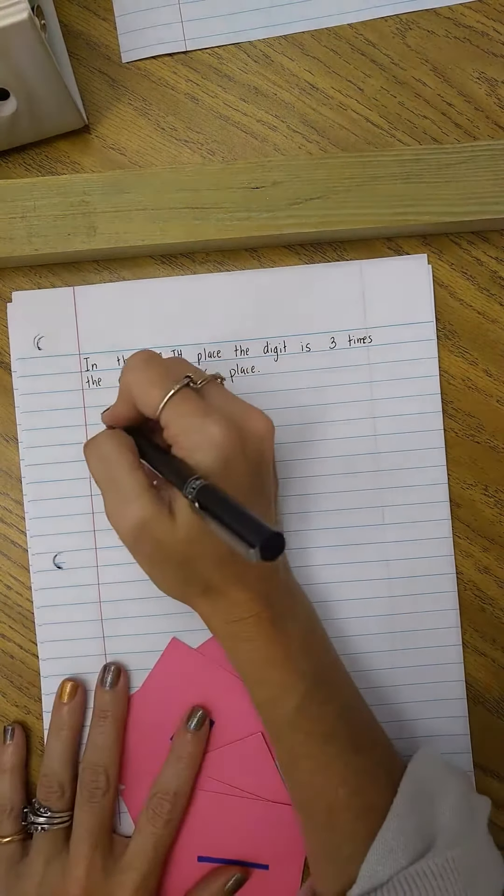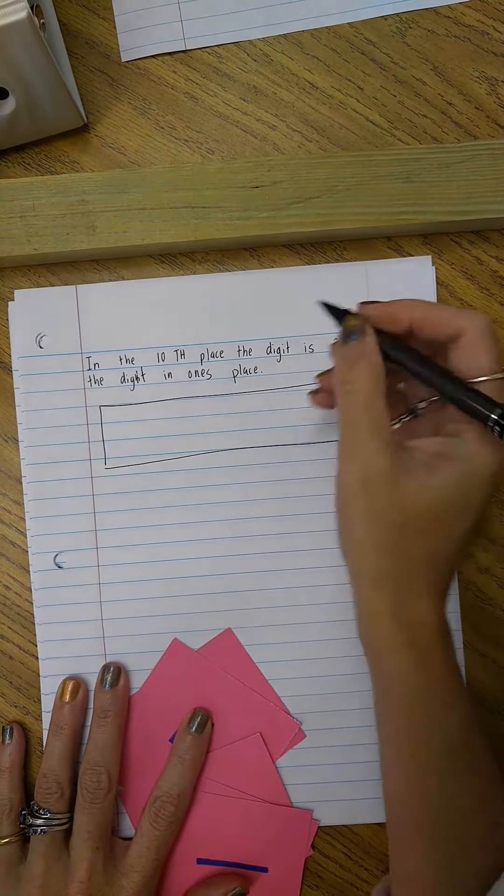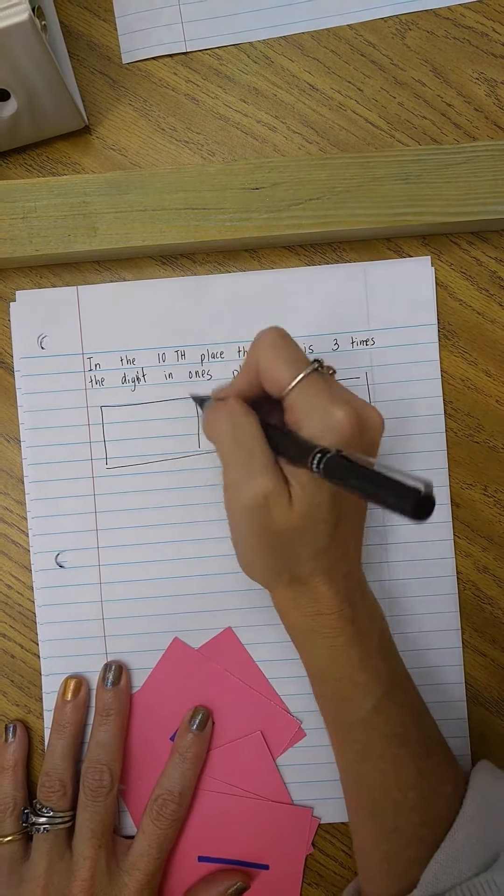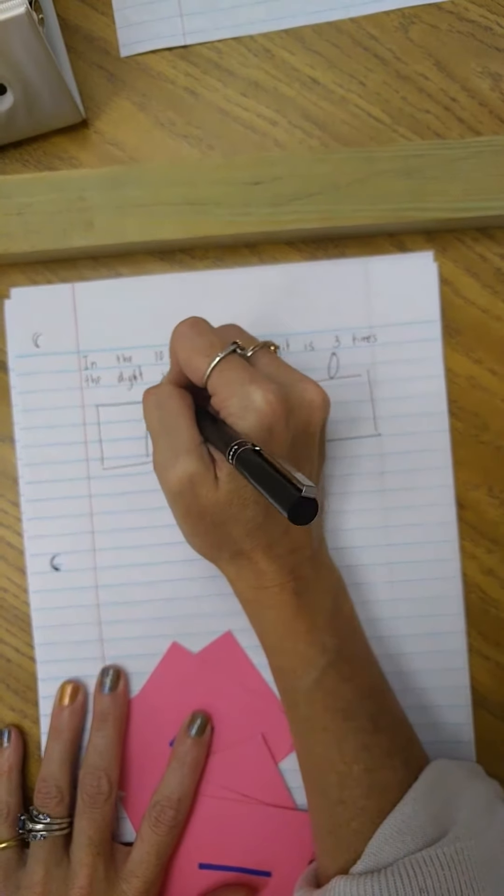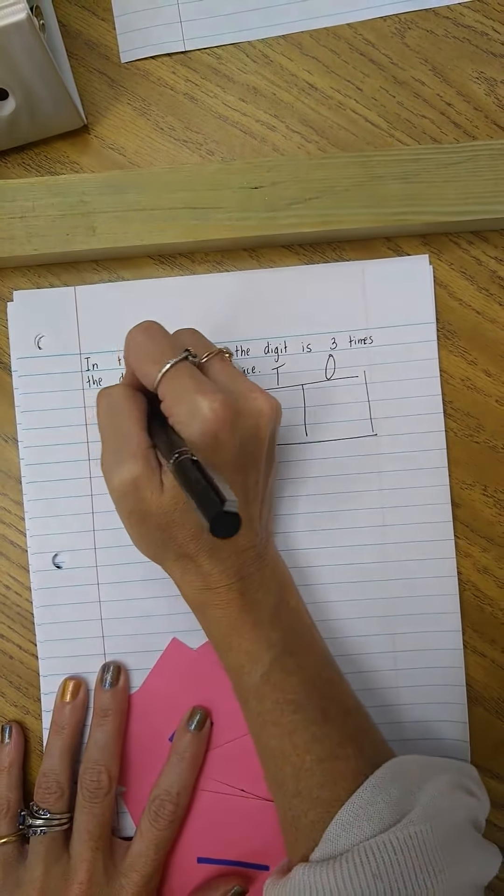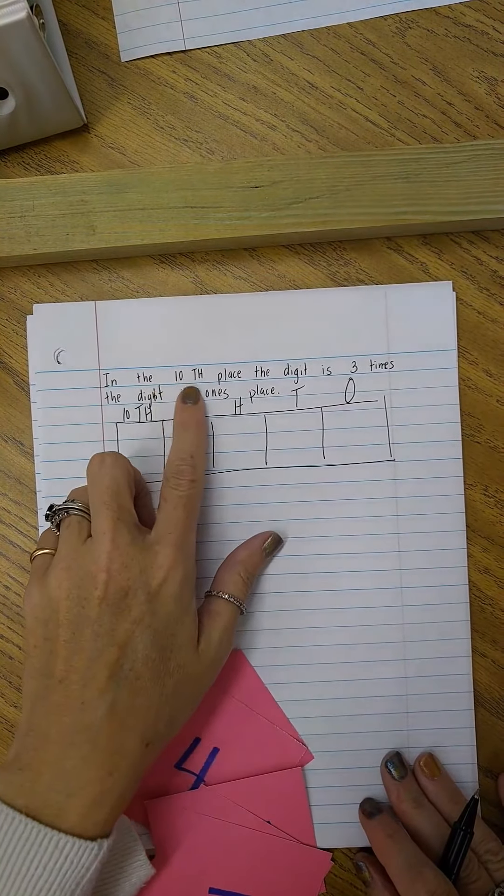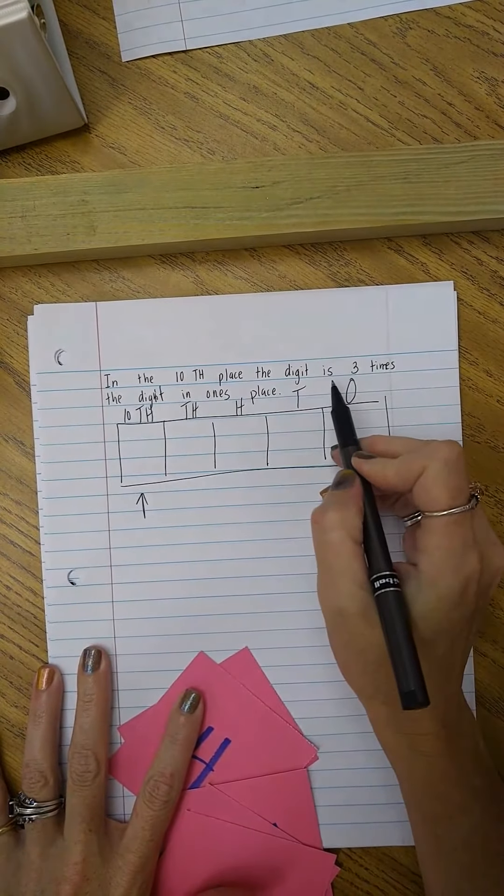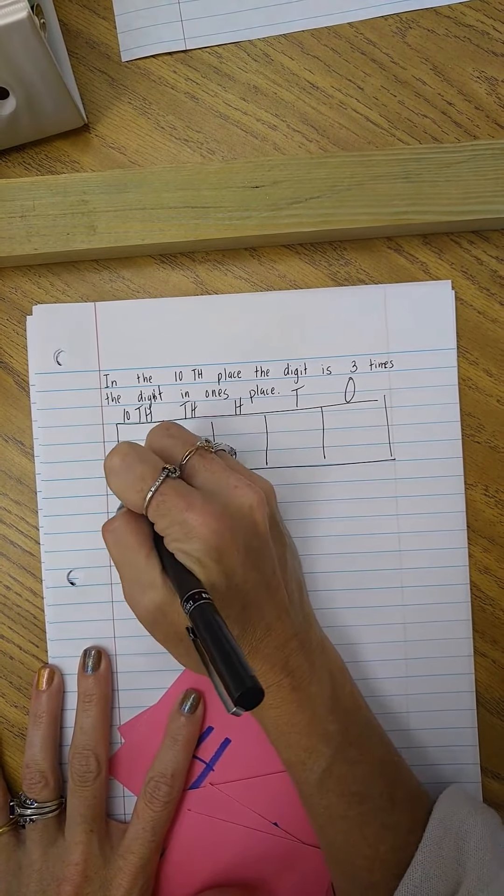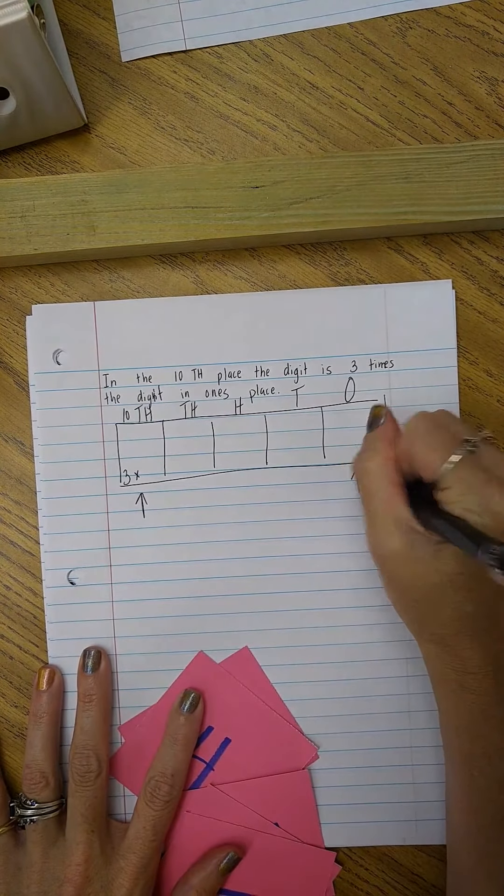So I would make out a place value chart, same thing, always referring back to that place value chart: ones, tens, hundreds, thousands, ten thousands. Alright, so looking at my place value chart, it says in the ten thousands place that digit is three times the digit that is in the ones place.